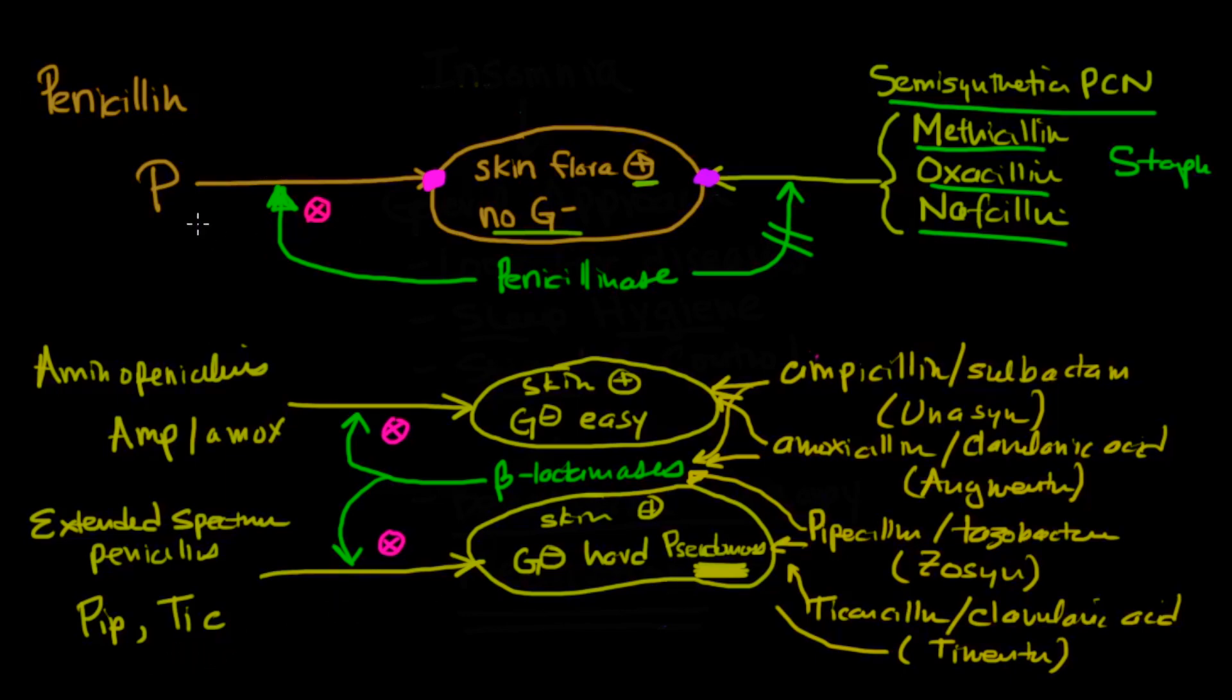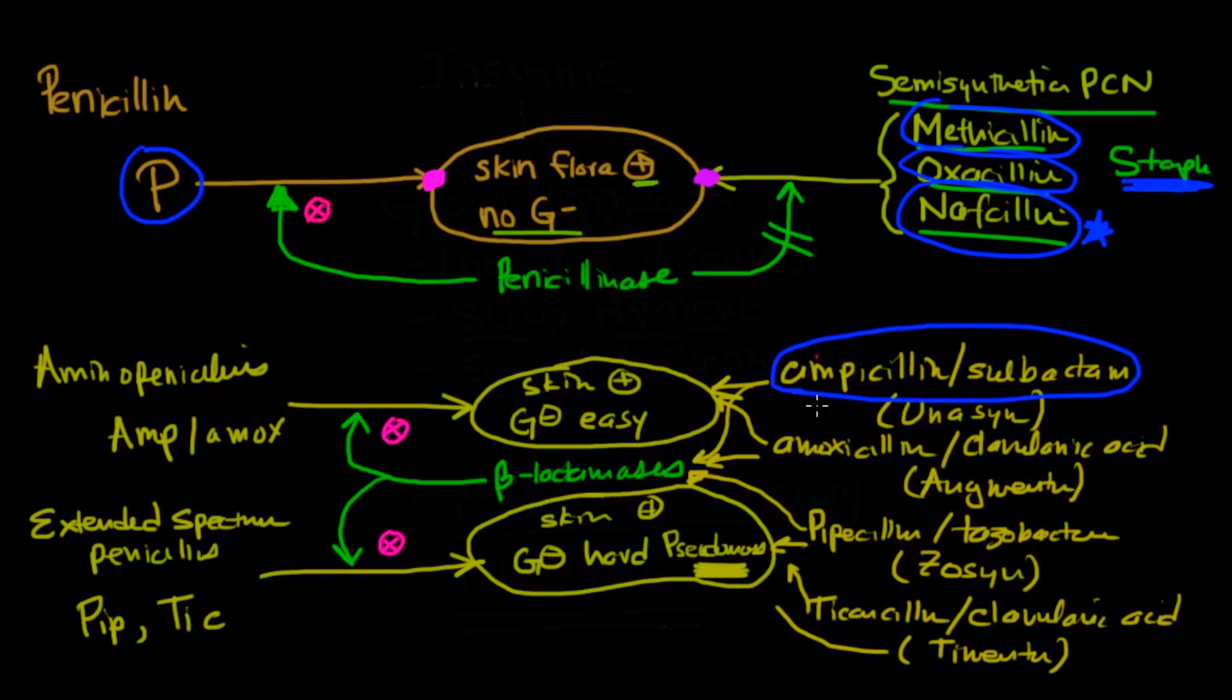So notice how many different medications we have. We have regular penicillin. We have methicillin, which is good against mostly gram-positives but not a lot of gram-negatives, and especially staph. Oxicillin and nafcillin are in that same category. Ampicillin sulbactam is great for most gram-positives and a few easy gram-negatives. Amoxicillin with clavulonic acid in Augmentin, also the same.